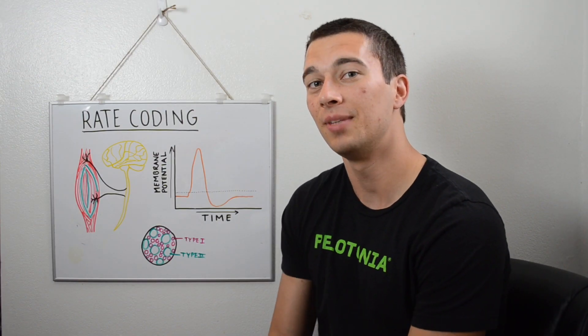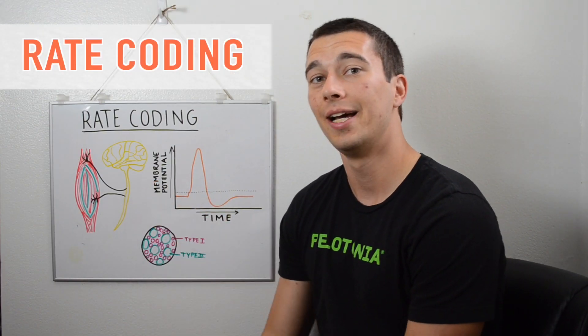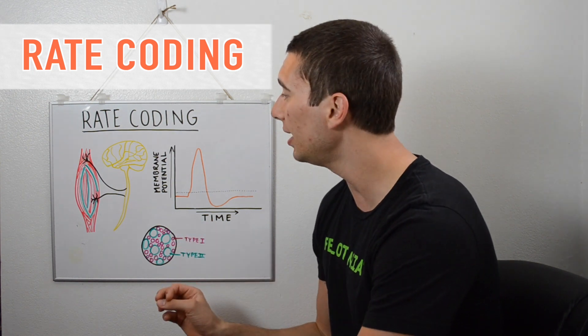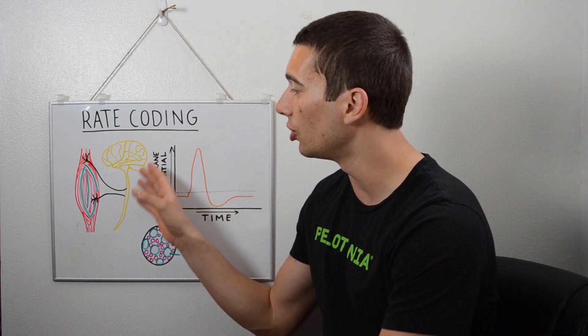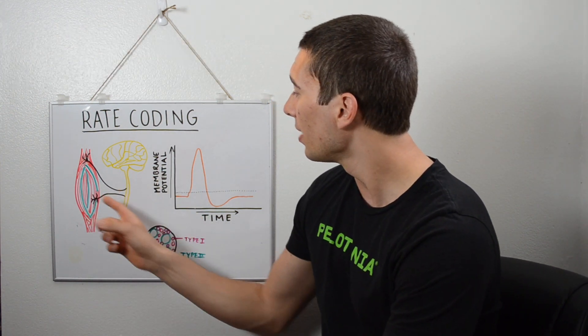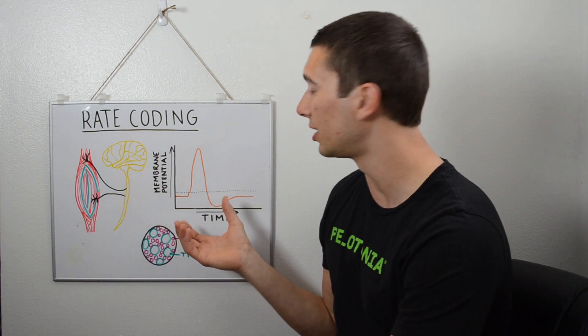Hey what's up guys, it's Matt with the movement system. Today we're going to be talking about rate coding and how that affects motor unit recruitment. We're going to talk about how that affects the nerve to muscle conduction and that relationship, as well as getting to the membrane potential and some of the electrophysiology involved.